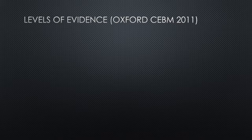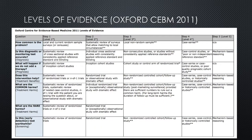Enter the new levels of evidence table from the Oxford CEBM, first published in 2011. They have very judiciously divided the table according to the type of question being asked. So if your question is an epidemiological one of how common the problem is, then randomised controlled trials are nonsensical — your highest level of evidence would come from a simple survey or census, which in the old table would have been down at level 4. If you're looking at diagnostic tests, the top level evidence would be from systematic reviews of cross-sectional studies with proper reference standards, again something which previously would have come much lower down the evidence table.